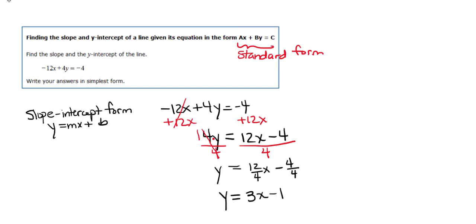So now we have something that matches up with the y equals mx plus b form that we were looking for. So we can identify the coefficient of x. The number in front of the x has to be our m, our slope. So m is equal to 3.